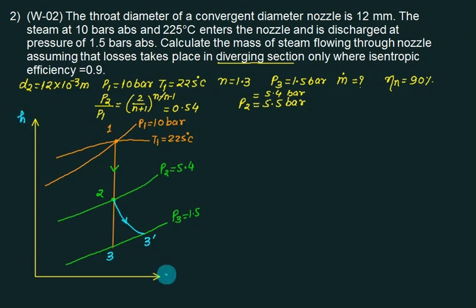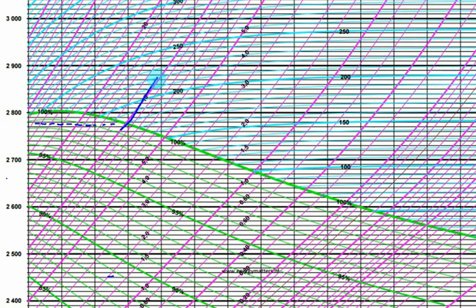This is Mollier diagram. This one is 10 bar line. Now this temperature is 225°C. Can you see 225? Two lines you have got. One is 200, one is 250. This one is 200 line. This one is 250 line. This one is 10 bar line. Your point between 200 and 225, so approximately draw this 225. Locate your point 1. Enthalpy is very close to 2900. We will make it 2890.